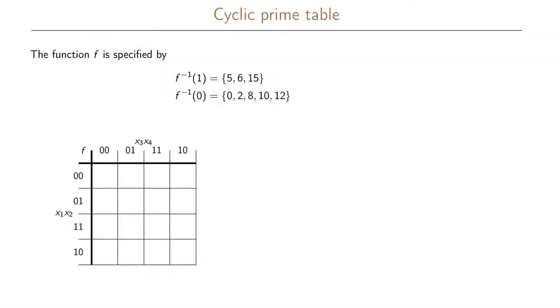We will now look at an example where we will have a cyclic prime table. In this example we have the onset and the offset specified for our incompletely specified boolean function, so we have also a don't care set.